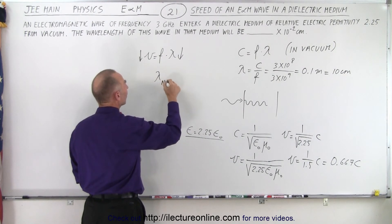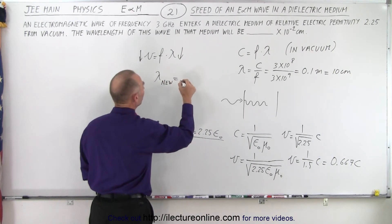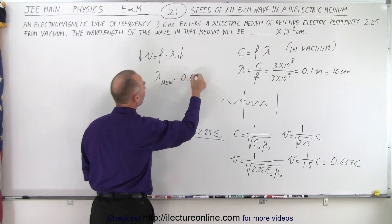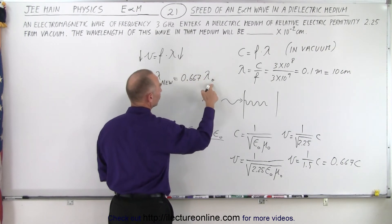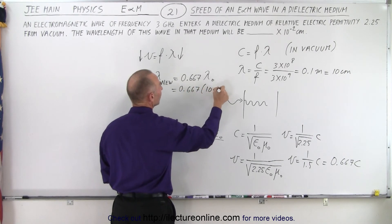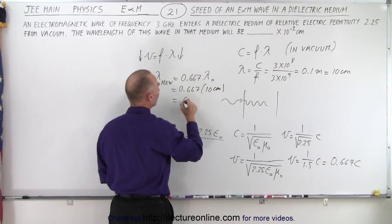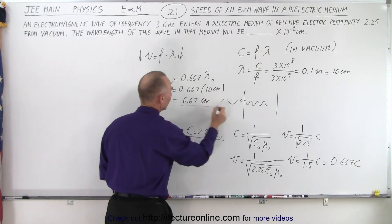So that means that the new wavelength going into the dielectric material is going to be equal to 0.667 times the original wavelength which was 10 centimeters. So 0.667 times 10 centimeters would then be equal to 6.67 centimeters. And so that's the answer.